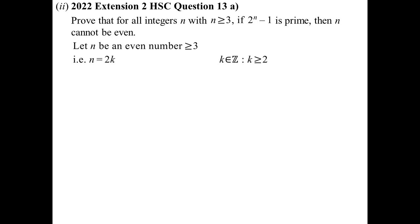Why K greater than or equal to 2? Because the question says for all integers N greater than or equal to 3, so the first valid even N is 4. So 2^N − 1 equals 2^(2K) − 1. Using difference of two squares: (2^K − 1)(2^K + 1). If I'm trying to show something is not prime, I need two factors and need to show neither equals 1.